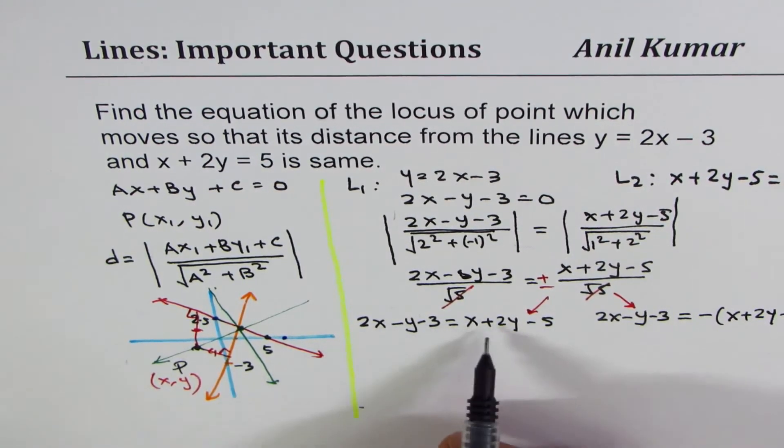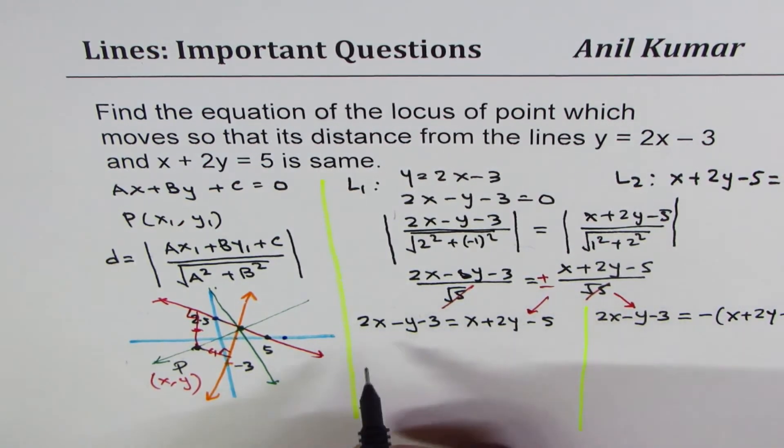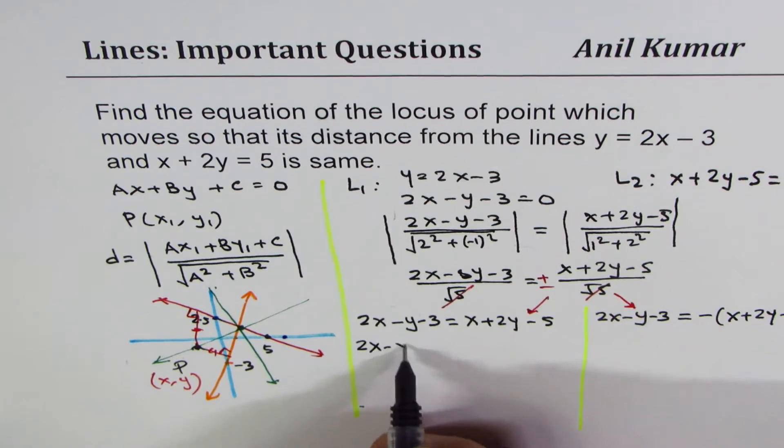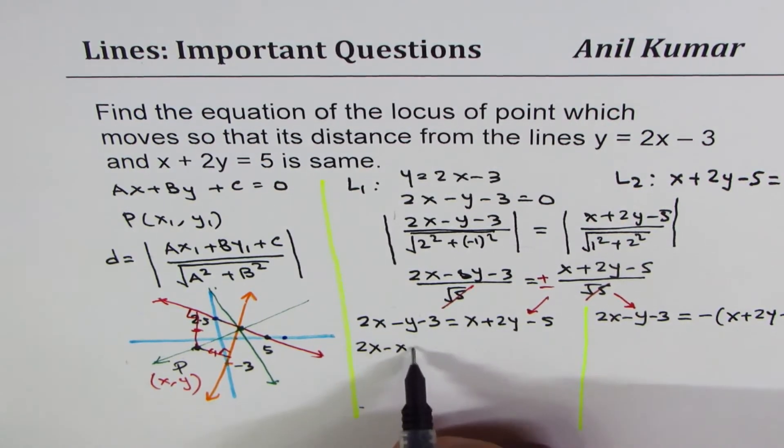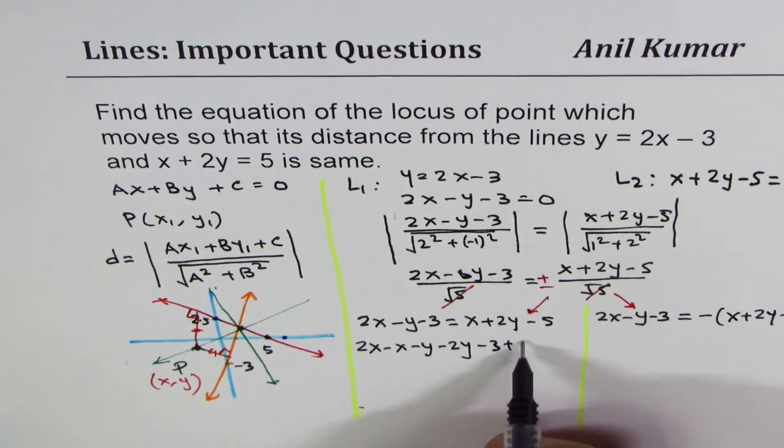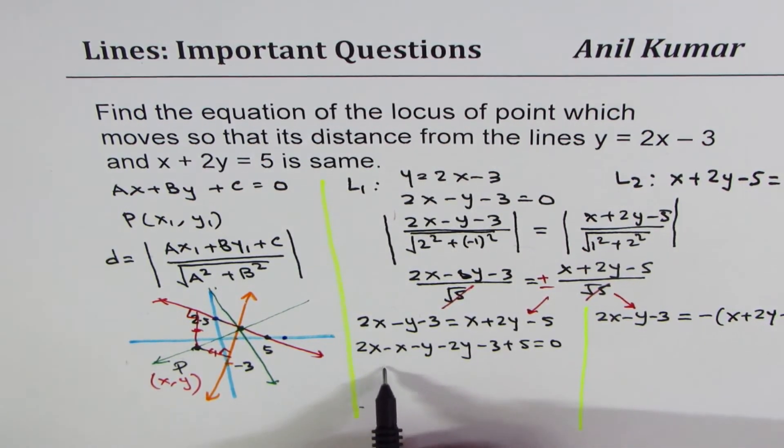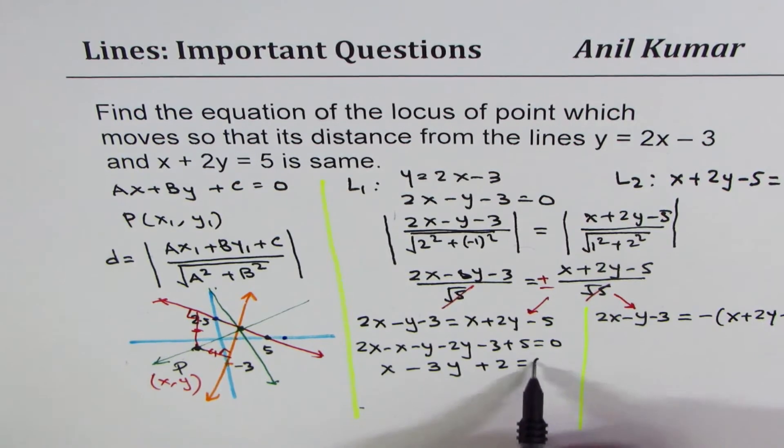Let's rewrite these equations. The first one here is 2x minus y minus 3 equals, if we take positive, we get x plus 2y minus 5. And if I take negative, we get 2x minus y minus 3 equals negative of x plus 2y minus 5. Let's solve them. Taking these terms to the left, we are solving these two equations now. 2x minus x minus y minus 2y, we have minus 3 plus 5 equals 0. Combine the like terms, 2x minus x is x, minus y minus 2y is minus 3y. That gives me plus 2 equals 0.